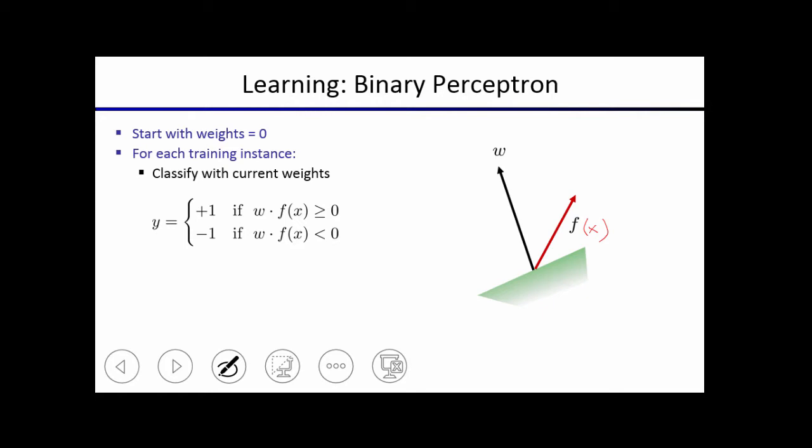And then you take the dot product, and you either compute it to be plus one or minus one. So in this case, the classified feature vector would be plus one. And right now, you don't know if it's correct or incorrect. If the actual label is plus one, then you don't do anything.